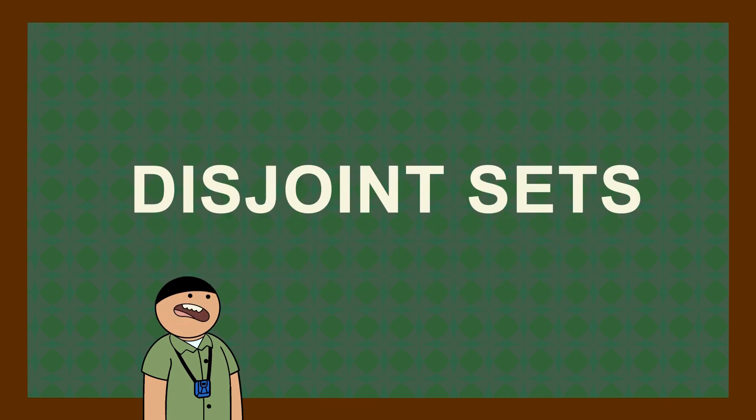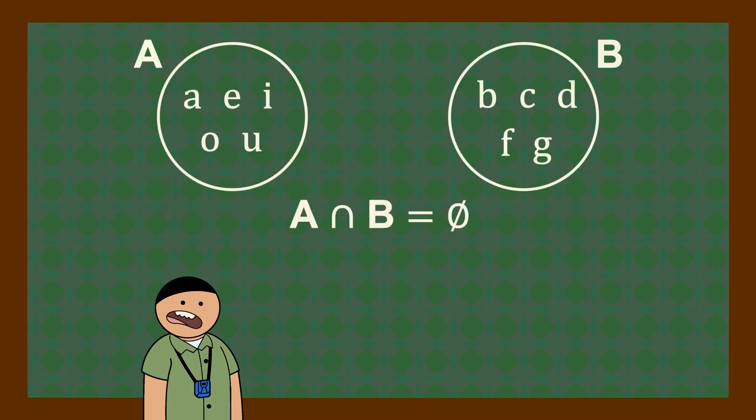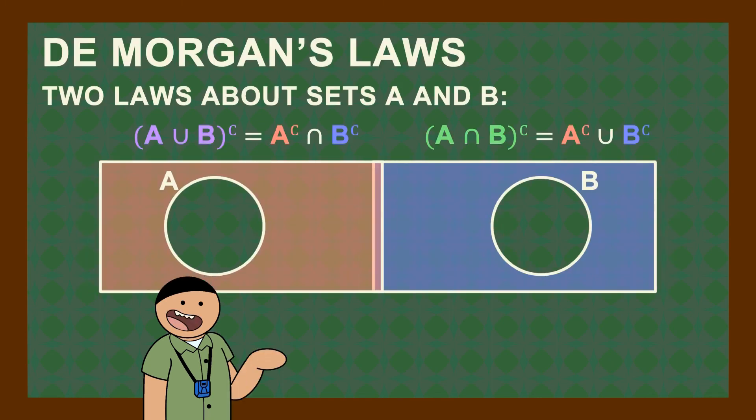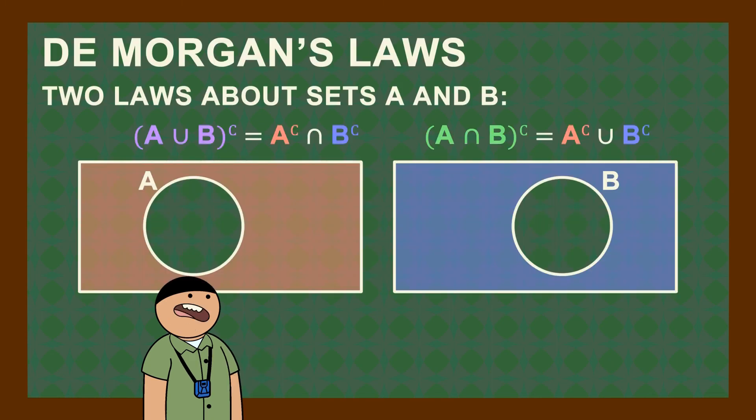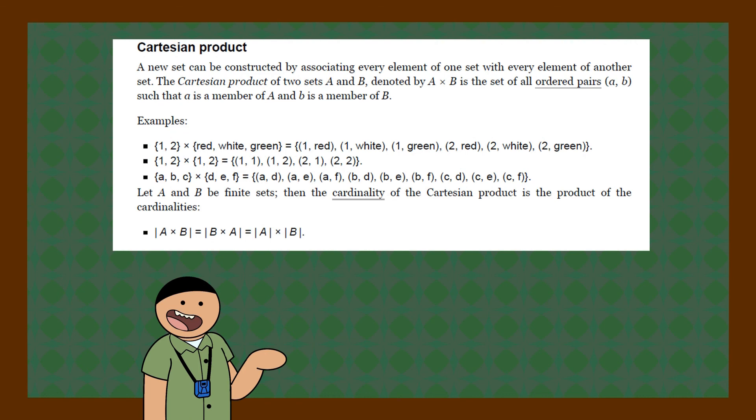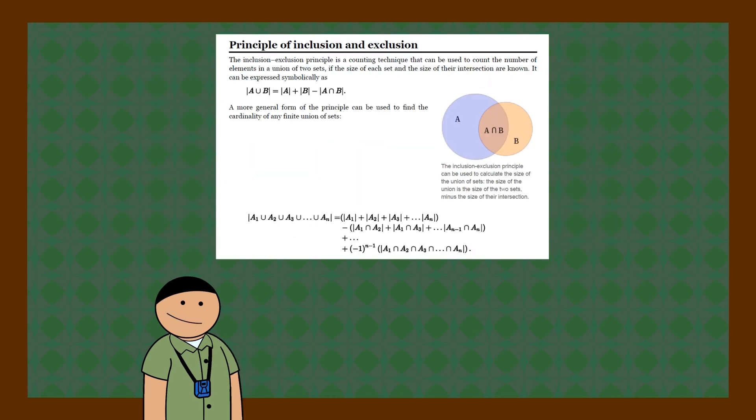Oh, I forgot about disjoint sets. If A intersect B is an empty set or there are no objects common in A and B, then A and B are disjoint sets. Let's finish this video with De Morgan's laws. There were two laws about the sets A and B. I think it's better to show it than to tell it. I want to tell you more about set theory like Cartesian product and principle of inclusion and exclusion but I think that's enough set theory for now.